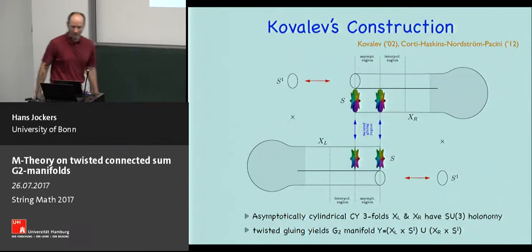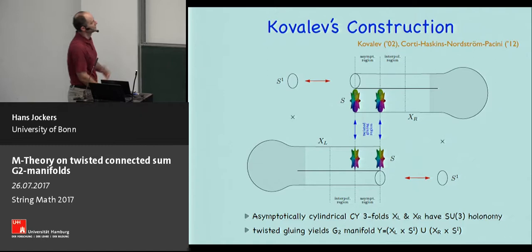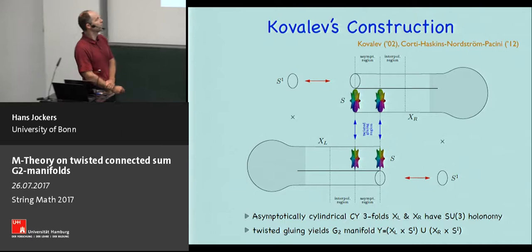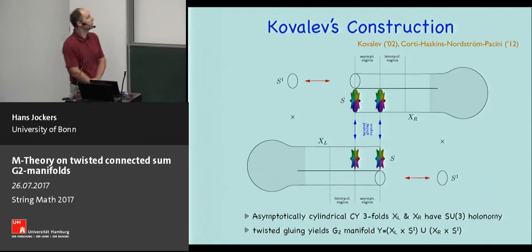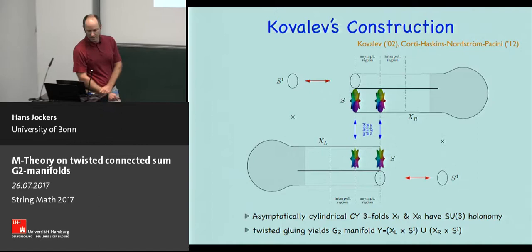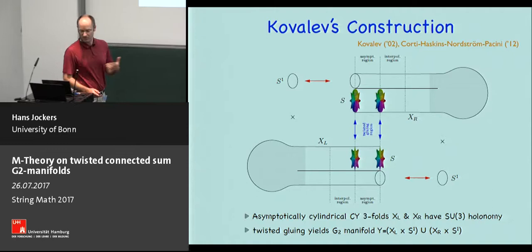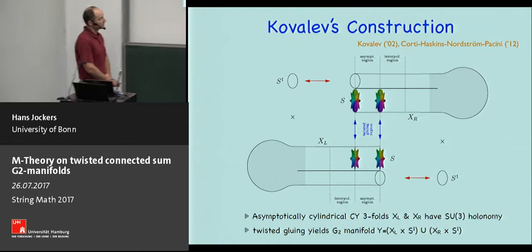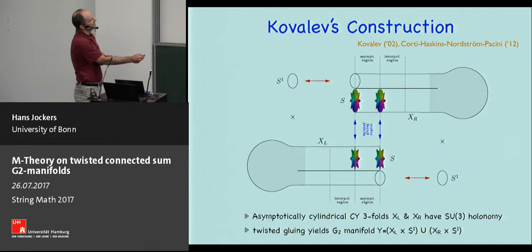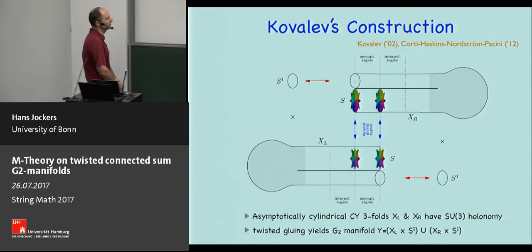Let me now get to the geometry and the basic idea of Kovalev's construction. If you want a seven-dimensional manifold with G2 holonomy, one starting point is a Calabi-Yau threefold with SU(3) holonomy tensored with an additional circle — giving a seven-dimensional manifold but still with SU(3) holonomy, a subgroup of G2. The idea is to take two Calabi-Yau manifolds tensored with S1 and glue them together in a twisted way such that the whole space has G2 holonomy. The precise recipe uses what is called an asymptotically cylindrical Calabi-Yau threefold.